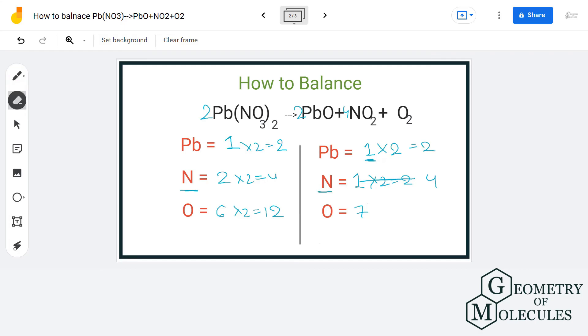Now we will calculate the number of oxygen atoms on the product side. We have 2 plus 4 into 2 equals 8 plus 2, that equals to 12.